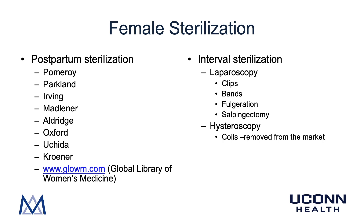Other postpartum techniques include Irving, Madlener, Aldridge, Oxford, Uchida, and Kroener — these are more detailed reading if you want to explore further, available at glowm.com, the Global Library of Women's Medicine. In terms of interval sterilization, which would be appropriate for ZC, this is done through laparoscopy. The fallopian tubes can have clips or bands applied, fulguration or burning with electrosurgery can be performed, or the fallopian tubes can be removed — salpingectomy. In the past, hysteroscopic sterilization was offered by placing small coils inside the openings of the fallopian tubes, but this has since been removed from the market.